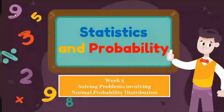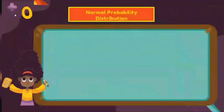Week 5: solving problems involving normal probability distribution. For this session, we are going to solve for the area below the mean, above the mean, and between A and B.